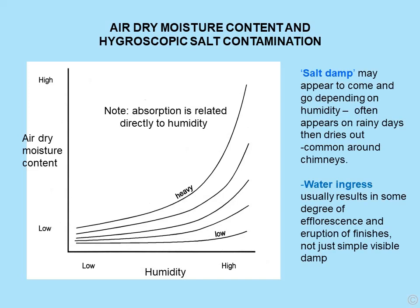Where dampness is caused by hygroscopicity, we commonly refer to it as salt damp. It appears to come and go depending on humidity — often appearing on rainy days then drying out — and is also common around chimneys. Salt damp can change pretty rapidly, often within a few minutes from visibly dry to visibly damp. Water ingress, however, usually results in some degree of efflorescence and eruption of finishes, not just simple visible damp.